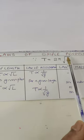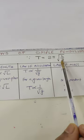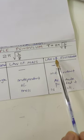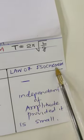First is law of length. Second is law of acceleration. Third is law of mass. And fourth is law of isochronism. Isochronism. Let us understand one by one.